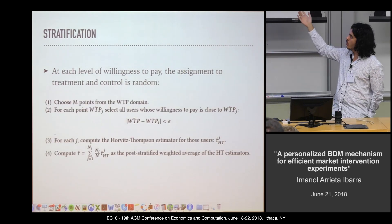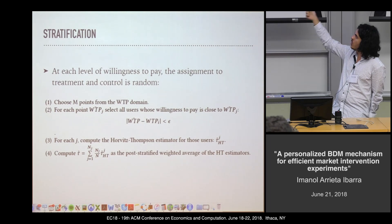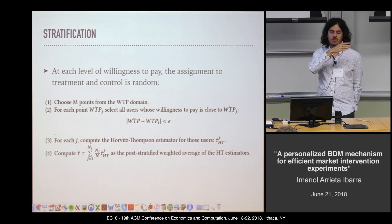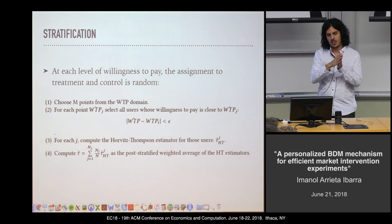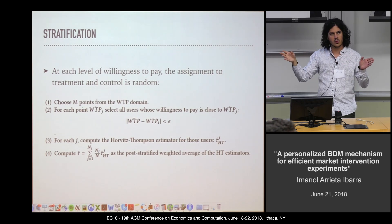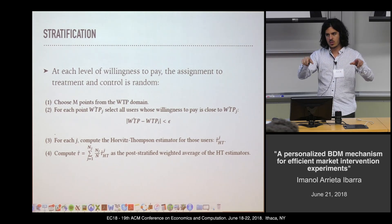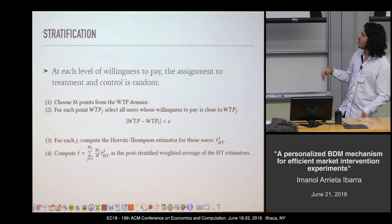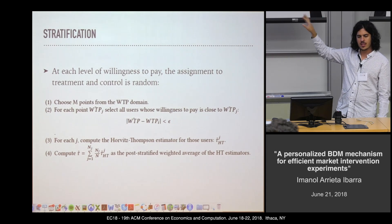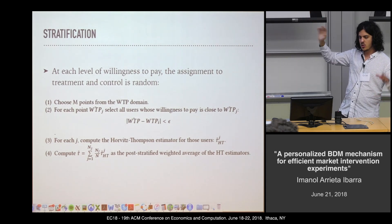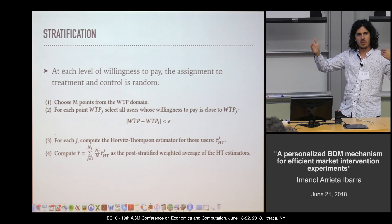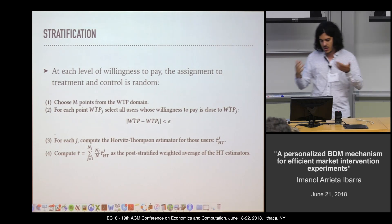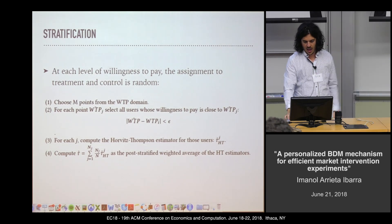Another strategy for causal estimation is stratification or block estimates. We divide the space of users depending on the probability of being treated into different bins, compute the difference-in-means estimator in each bin, and then post-stratify by taking a weighted average. This is generally a more robust estimator. The problem is that at the very ends of the bins you need to do some trimming, so the final population for which you compute estimates is not the one you're actually interested in. That's why we concentrate on the Hajek estimator.